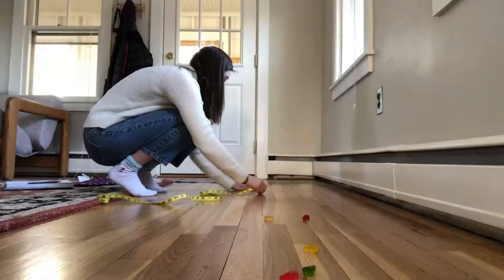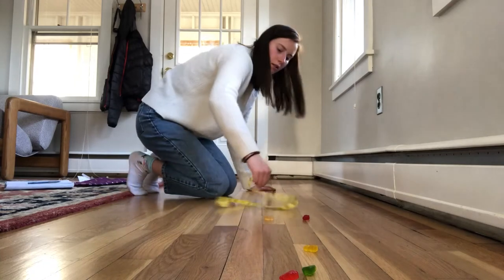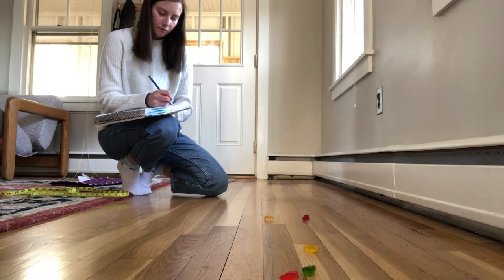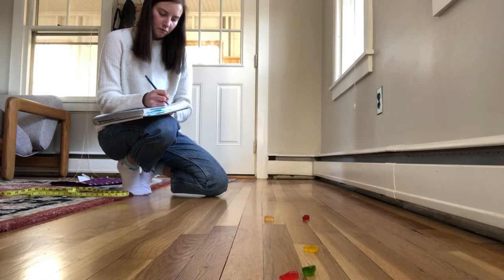After you've launched 10 gummy bears with your first catapult, take your measuring tape and measure from where you launched the gummy bear to where the gummy bear landed and write down that distance. Then repeat all these steps with catapult two.